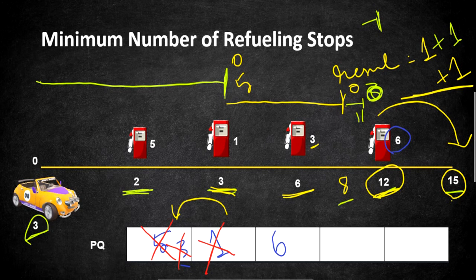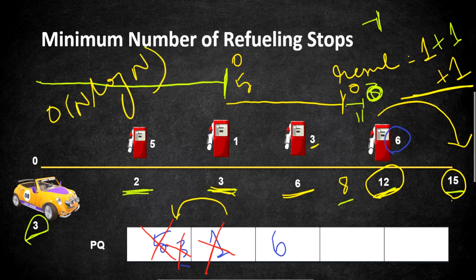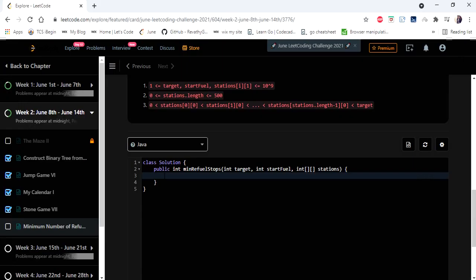The overall idea is simple: travel as far as you can, pick the station with the highest gas among all stations you've passed, fill up, and continue to the destination. This approach runs in O(n log n) time because we iterate through all stations once and each push or pop from the priority queue takes O(log n) time.